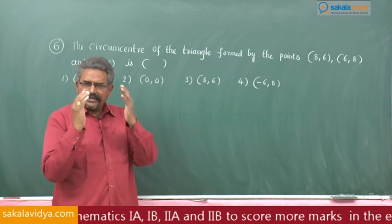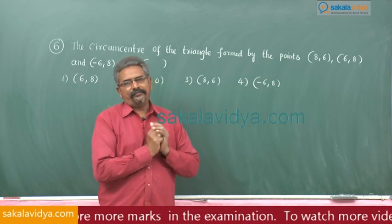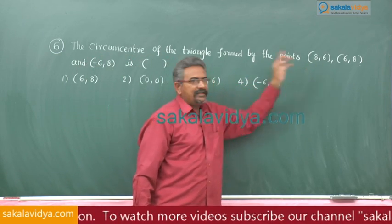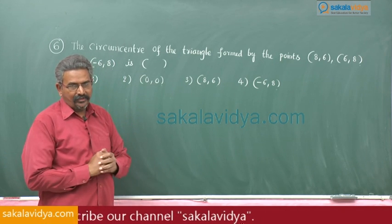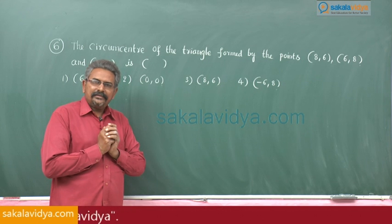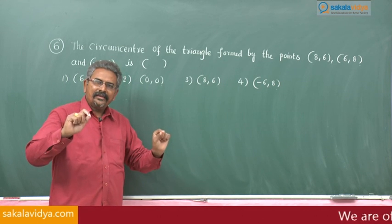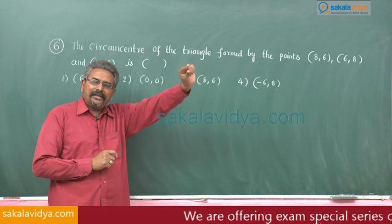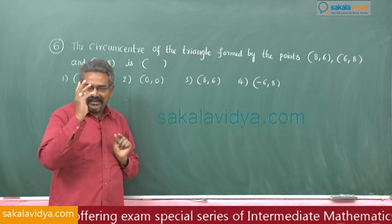Let us discuss what is the original method for this problem. Suppose, if A, B, C are the vertices of the triangle ABC, generally we find the perpendicular bisector of BC, perpendicular bisector of CA, perpendicular bisector of AB. We get 3 linear equations.